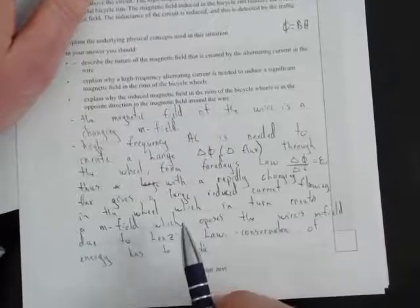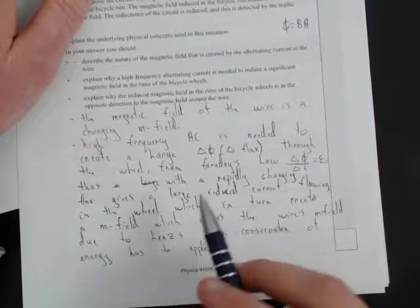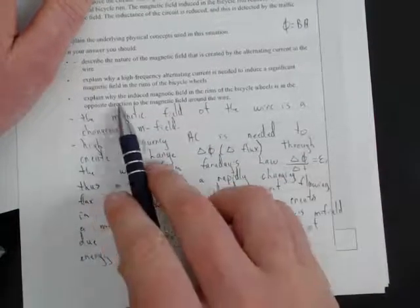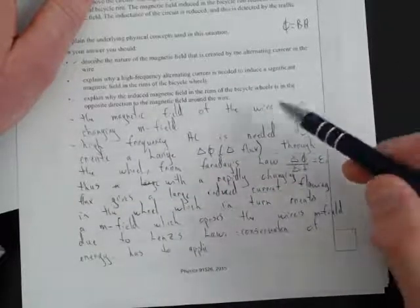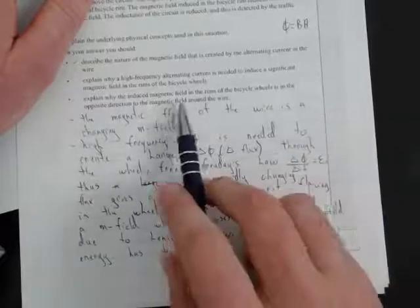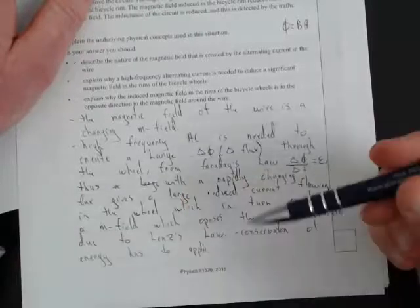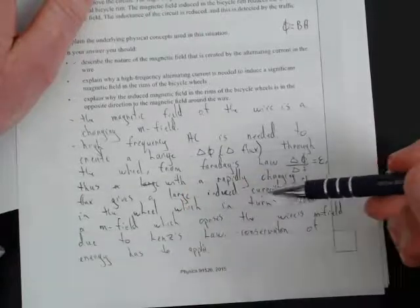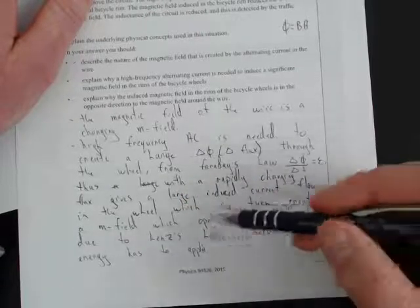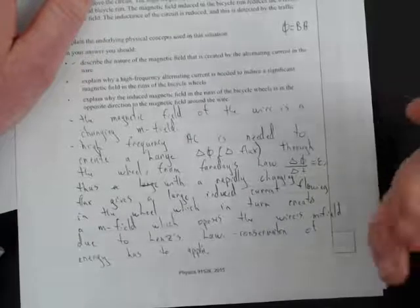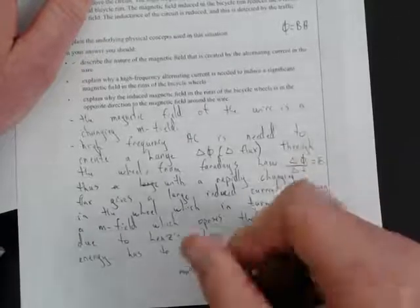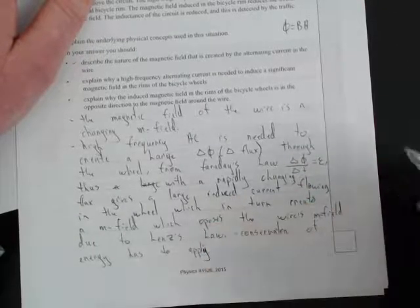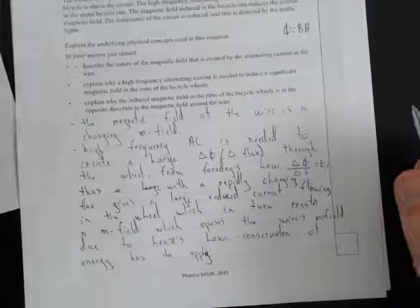To summarize: the induced magnetic field in the rims of the bicycle wheel is in the opposite direction to the magnetic field of the wire due to Lenz's Law, which is itself a consequence of conservation of energy — otherwise there would be a runaway effect and free energy, which does not occur.